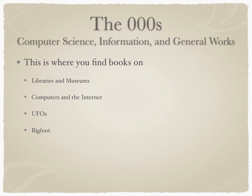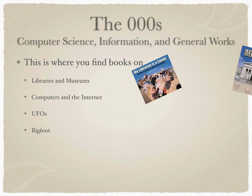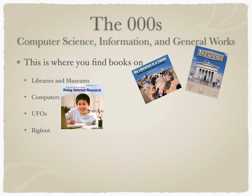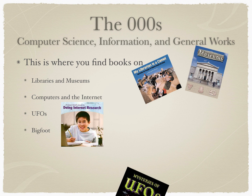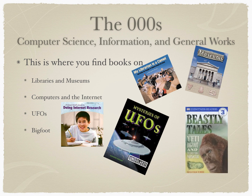The Zero Hundreds: Computer Science, Information, and General Works. This is where you find books on libraries and museums, computers and the internet, UFOs, and Bigfoot.